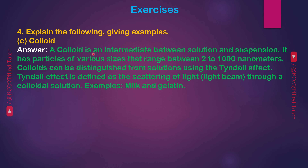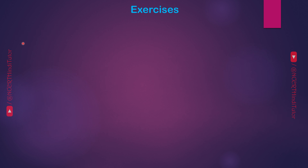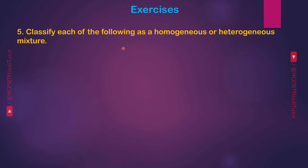C — Colloid: a colloid is an intermediate between solution and suspension. It has particles of various sizes ranging between 2 to 1000 nanometers. Colloids can be distinguished from solutions using the Tyndall effect, defined as the scattering of light through a colloidal solution. Examples: milk and gelatin. D — Suspension: it is a heterogeneous mixture that comprises solute particles that are insoluble but suspended in the medium. These particles are visible to bare eyes and are usually larger than a micrometer, large enough to undergo sedimentation.